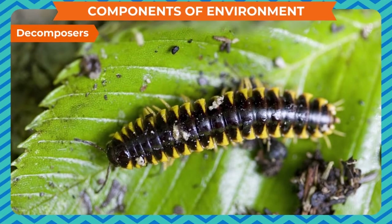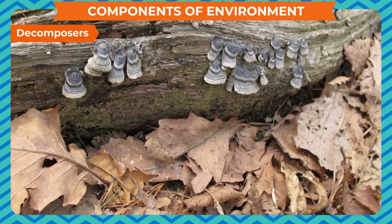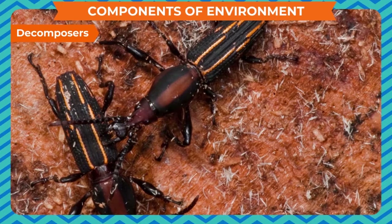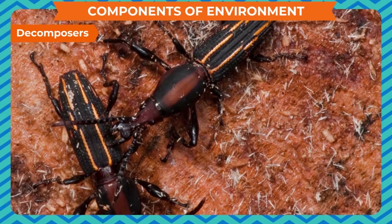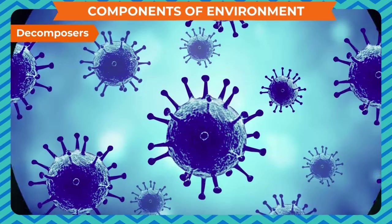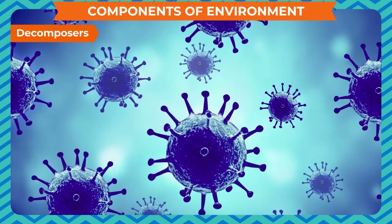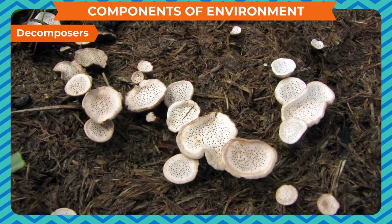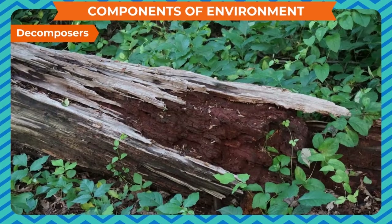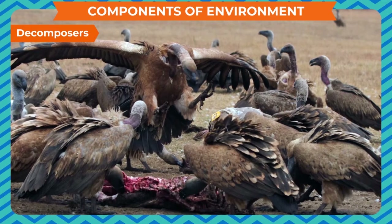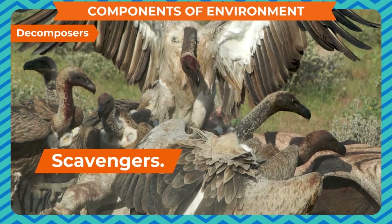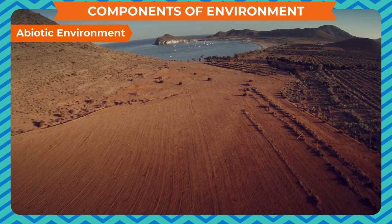Decomposers are those living things which depend on dead plants and animals for their food. They reduce them into simpler substances. They are the final consumers of the biotic environment. Some microorganisms like bacteria, fungi, and worms are also known as micro-consumers because many of them are microorganisms.